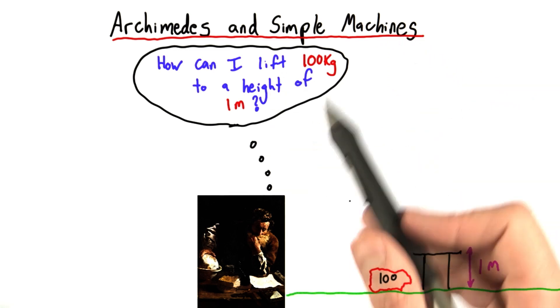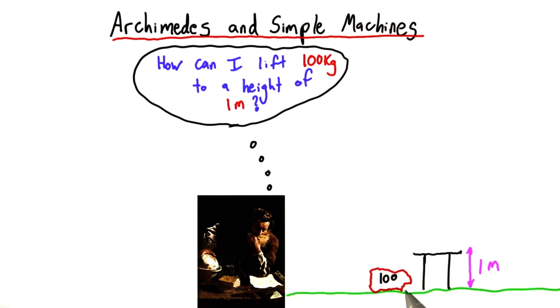Naively, we might think the only way to answer this question of how to get this, let's say, 100 kilogram rock onto this 1 meter table, is to pick it up and put it on the table.